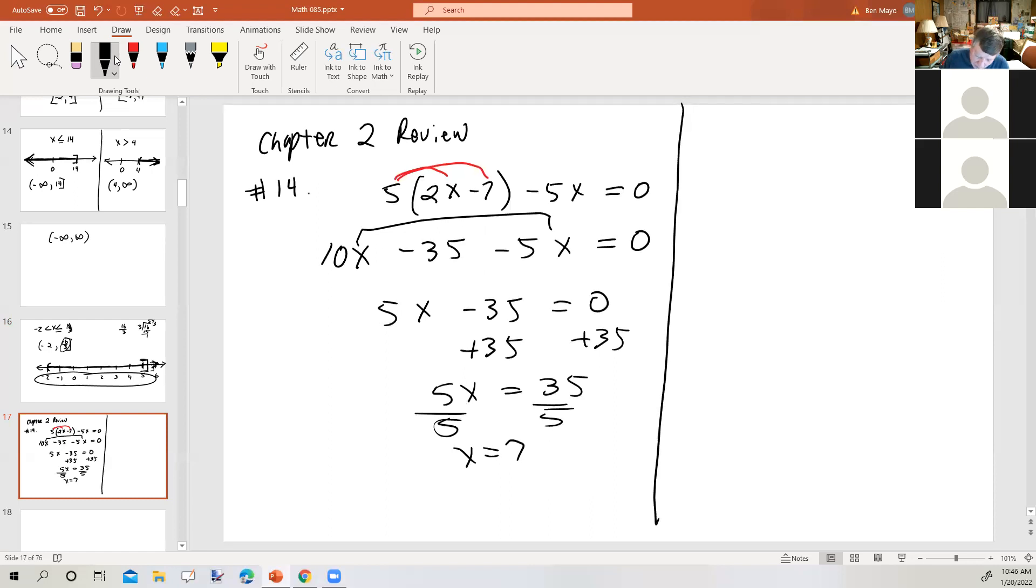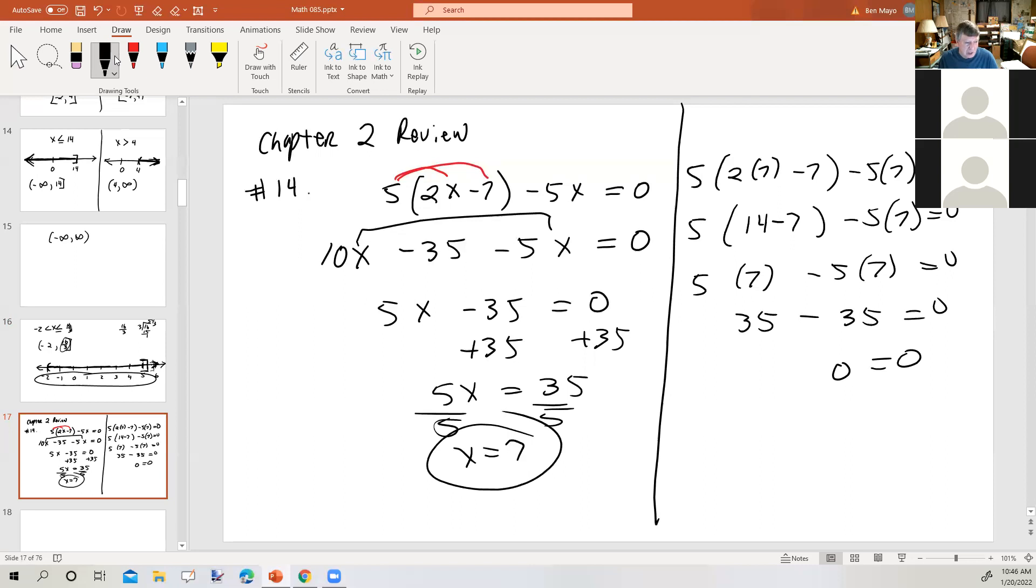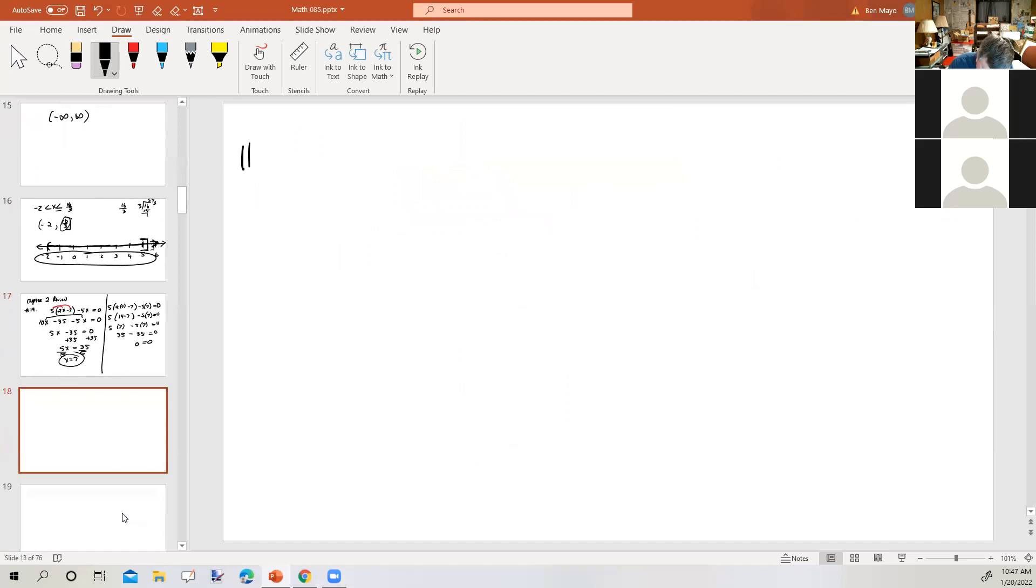Now we're going to go back and check our work. So we're going to take the original equation, except that every time x appears, we're going to replace it with a 7. Now simplifying the arithmetic. Inside the parentheses, 2 times 7 is 14. 14 minus 7 is 7. 5 times 7 is 35 minus 5 times 7 minus 35. 35 minus 35 is 0. 0 equals 0. So the solution checks. Are we okay with that situation? Yes.